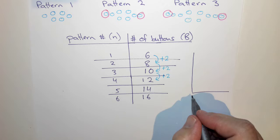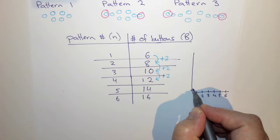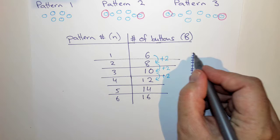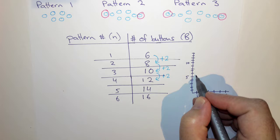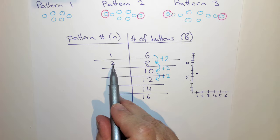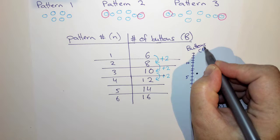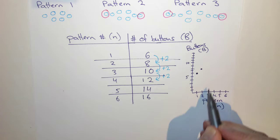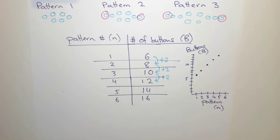Now let's turn this into a graph — just a rough sketch since I haven't got my grid. On this axis I've got my pattern number N, and on this axis I've got my number of buttons B. Pattern number one had six buttons, pattern two had eight, pattern three had ten, pattern four had twelve, pattern five had fourteen. So there's our pattern as a graph.